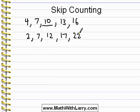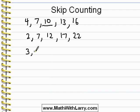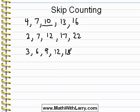Now the most common type of skip counting that we do is listing multiples of a number. Here's how this works. I'm going to list multiples of the number 3. What I'll do is I'll start on 3, and then just keep adding 3. So we get 6, 9, 12, 15, 18, and so on.